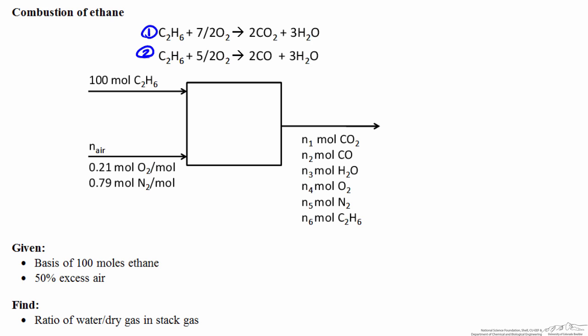In this problem we're given a couple pieces of information. We're going to assume a basis of 100 moles of ethane, which is labeled on the process flow chart. We know that there's 50 percent excess air fed to the reactor, and the composition of air is always 21 percent oxygen, 79 percent nitrogen. With this information we want to find the ratio of water to the dry gas in the stack gas, which is the reactor output.